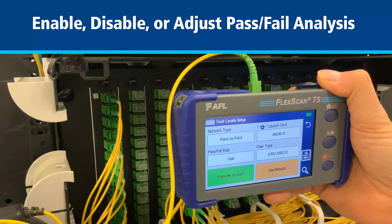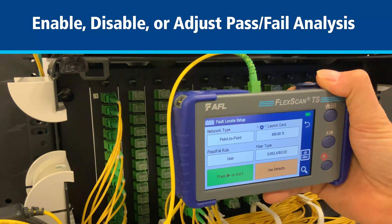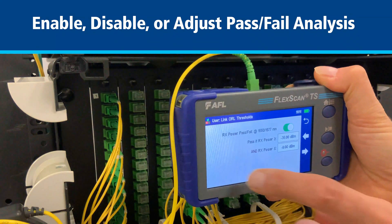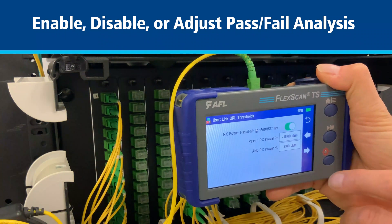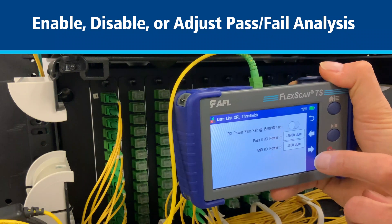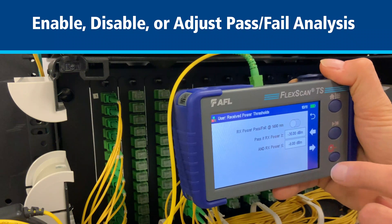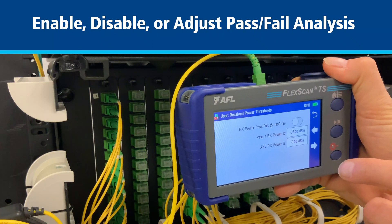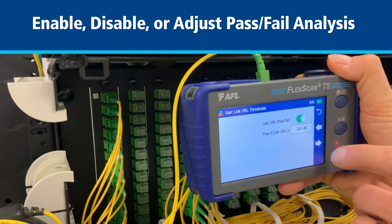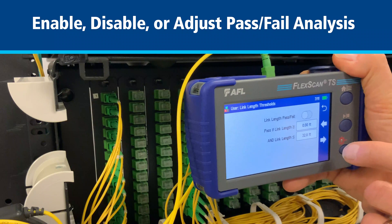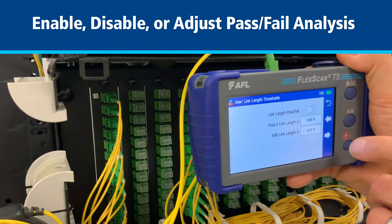Since we don't expect any live signals to be present when testing in the downstream direction, we can select pass-fail rules and disable received power pass-fail analysis at 1490 and 1577nm wavelengths. Pass-fail limits can also be disabled, enabled and adjusted for link ORL, link loss, link length, splice loss, connector loss and reflectance, and splitter loss and reflectance.